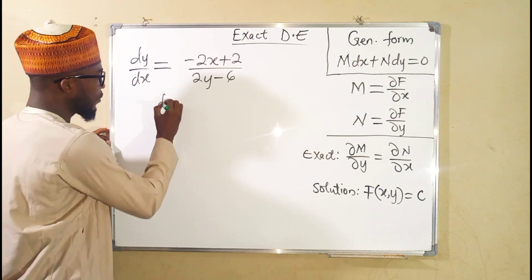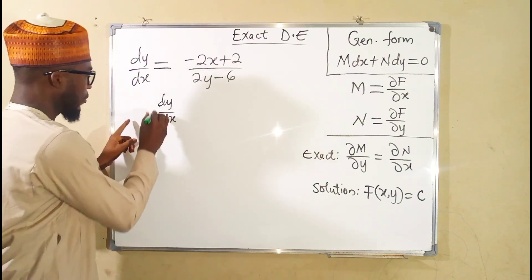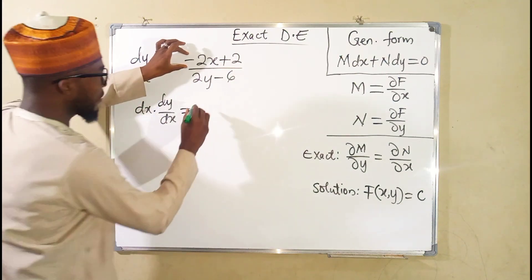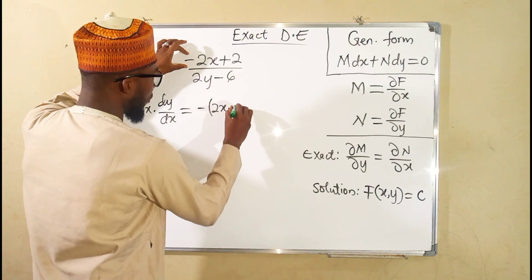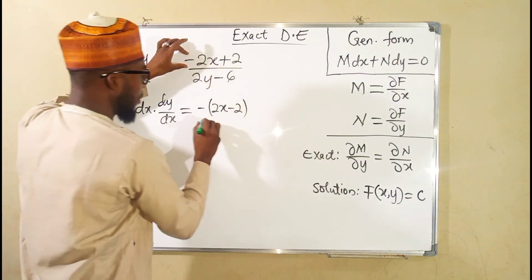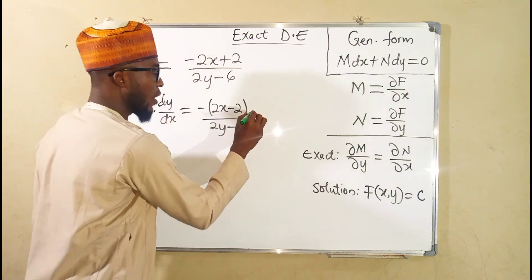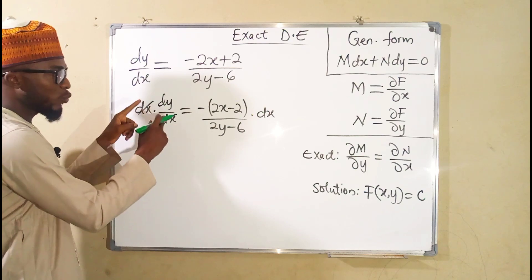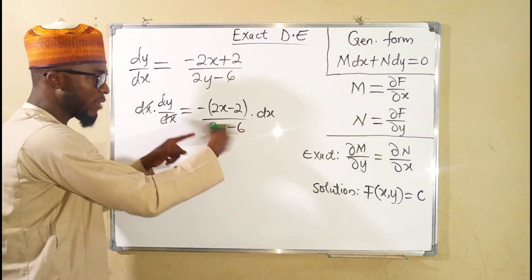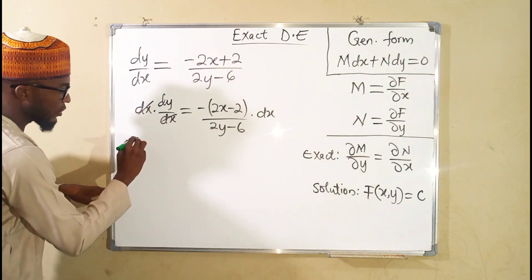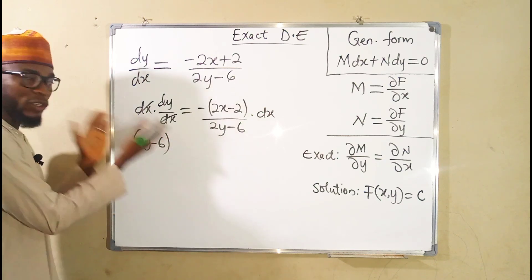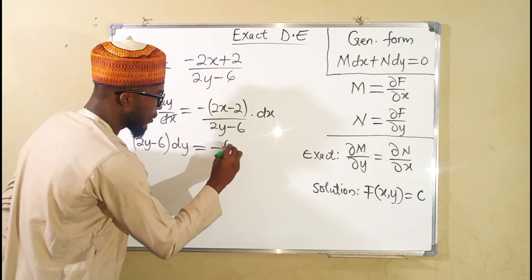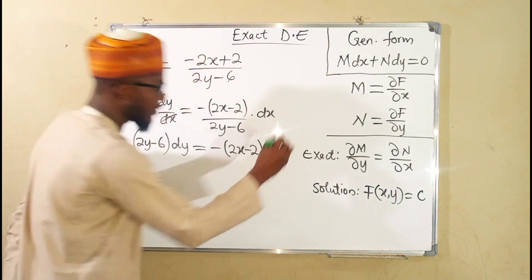We have dy over dx multiplied by dx. We can rearrange this as negative 2x minus 2 — which after expansion gives us this — divided by 2y minus 6, and we multiply by dx. This dx cancels the other dx. We can also multiply both sides by 2y minus 6 to eliminate it from the right-hand side, giving us 2y minus 6 times dy on the left and negative 2x minus 2 dx on the right.